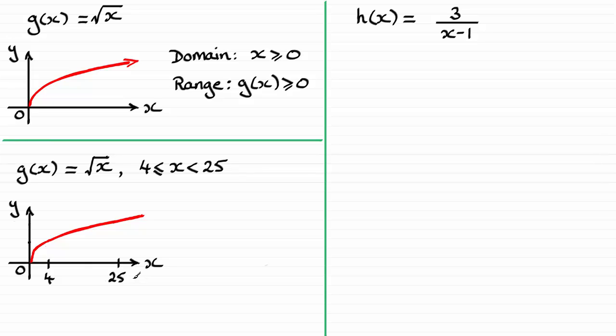And I'm going to need to know what the values of these extreme points are at 4 and at 25. So if I work out g of 4, g of 4 is going to be the square root of 4, which is clearly 2. And if I work out the square root of 25, g of 25, well that's going to be 5. So when x is 4, I get 2. So I'll mark that in there as 2. And when x is 25, I get 5. So I'll mark that in up there. This is not drawn to scale as I say.